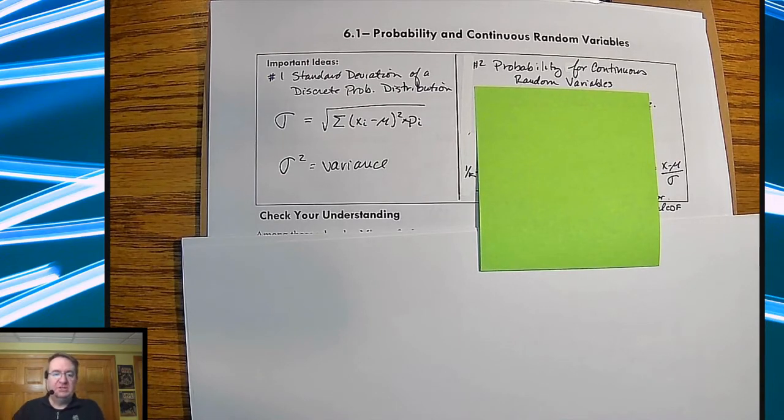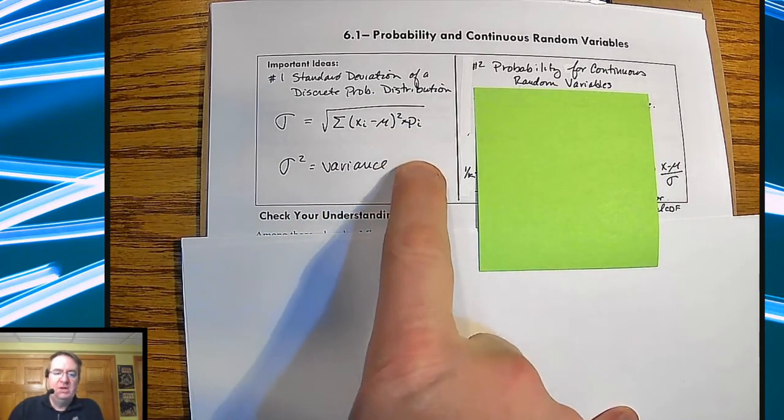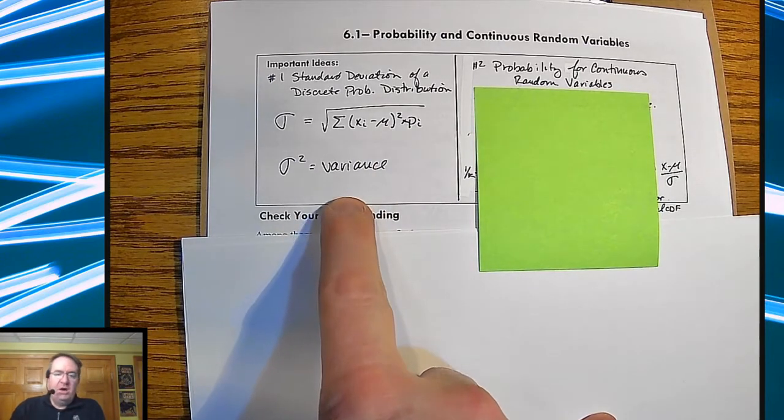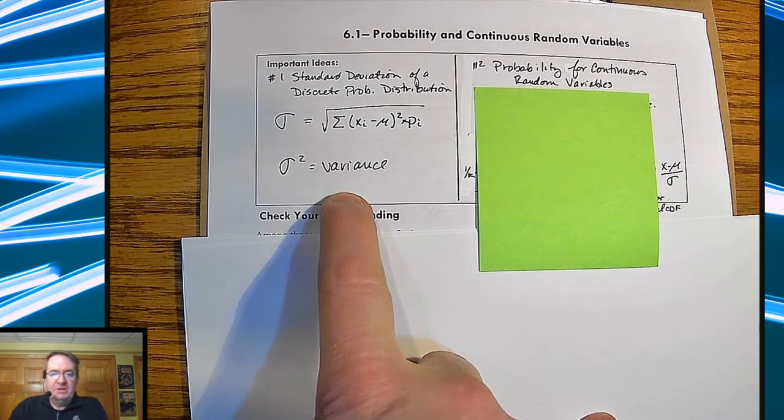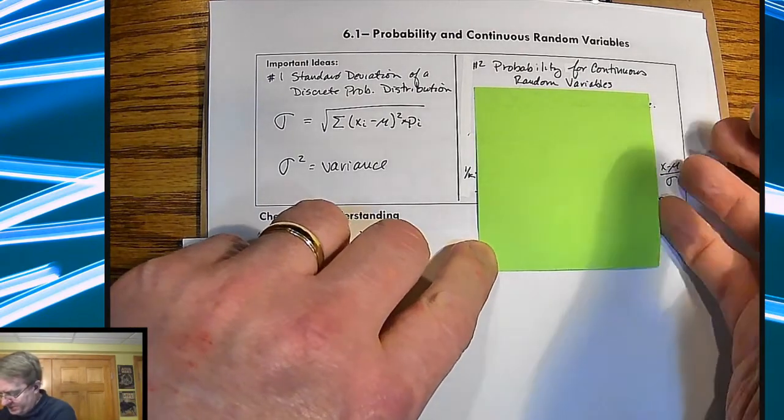What that does is it scales it by the number of items in the discrete probability distribution, but it also does the division for us at the same time. And then just as a reminder, sigma squared is going to be your variance.